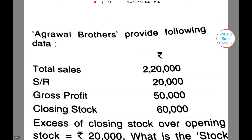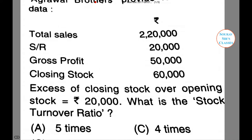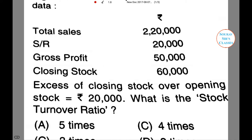The next question: Agarwal Brothers provide the following data. Total sales is given as two lakh 20,000; sales returns is 20,000; gross profit is 50,000; closing stock is 60,000; and excess of closing stock over opening stock is 20,000.